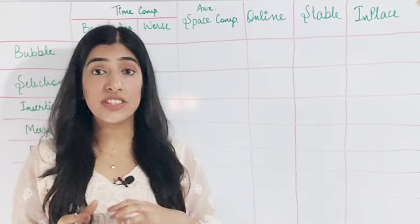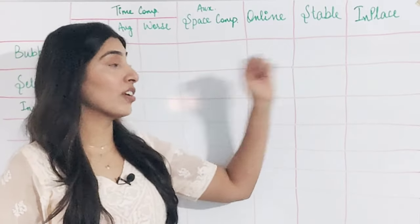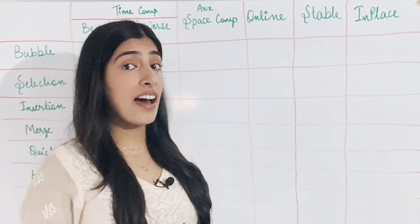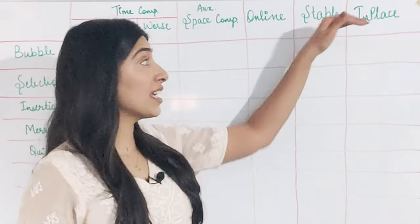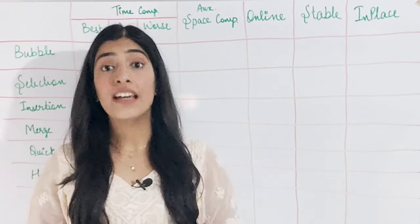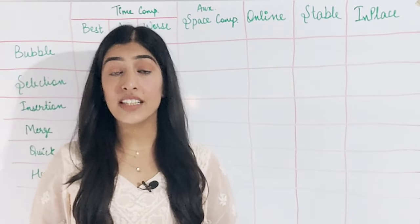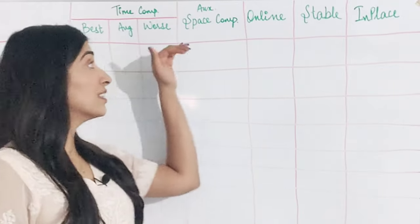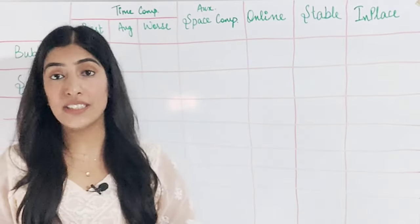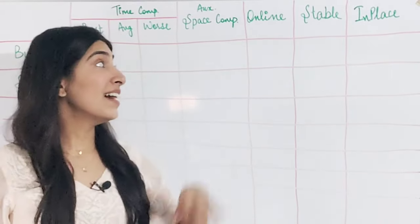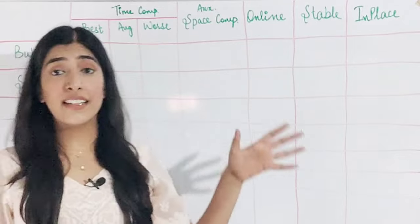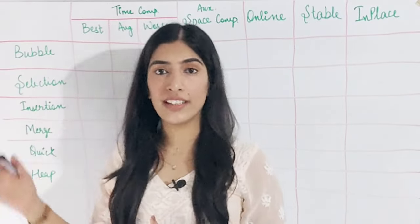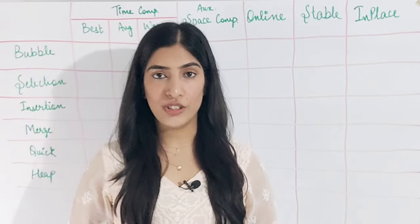We are going to check if our algorithm is stable or not. The last property is to check whether our algorithm is in-place or not. If the algorithm is in-place, it will not take any extra space, meaning the auxiliary space complexity will be O(1). These are the properties we usually compare to decide which sorting algorithm should be used.